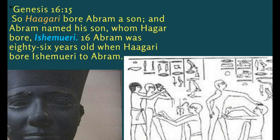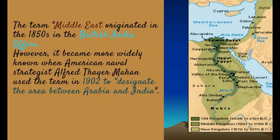There are some fundamentals that we need to put in place first. Number one is that the Middle East and the monarchs were created by Europe. The Middle East never existed 300 to 400 years ago — it was part of Northeast Africa.